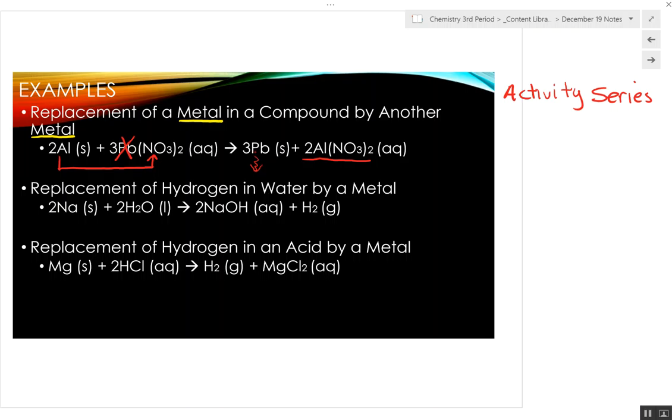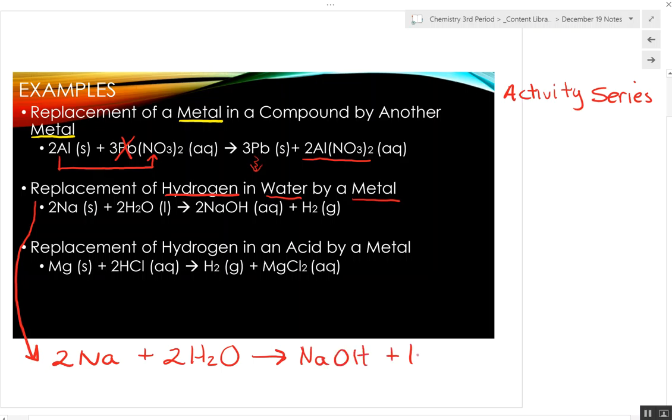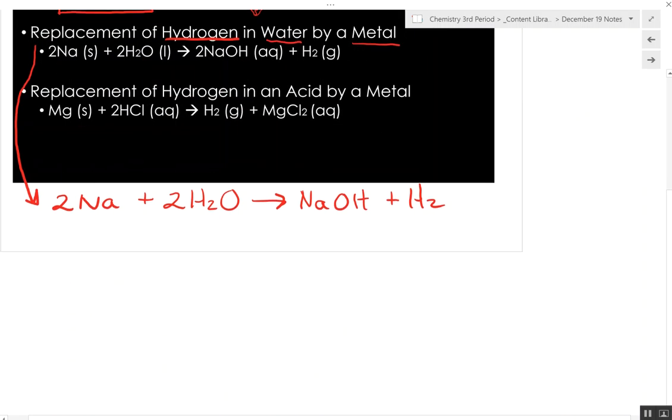Now, next thing that happens is a replacement of hydrogen in water by a metal. I'm going to take this and move it down here because we're going to do a little more explanation here. So we'll start with two sodiums plus two waters to make sodium hydroxide and hydrogen gas. Now, what happens here is let's just break, let's make it unbalanced.